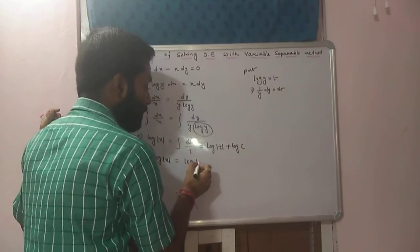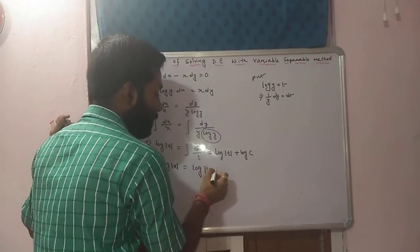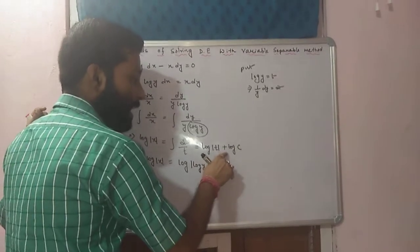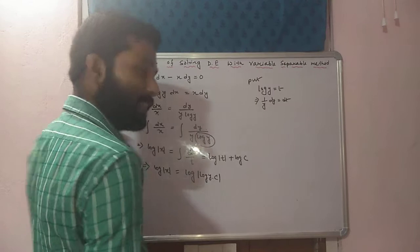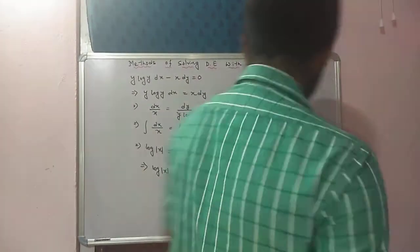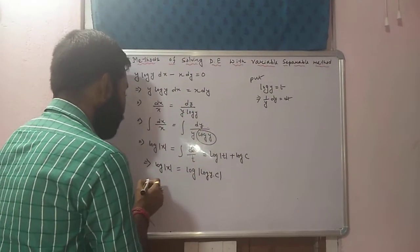Replace this t by log y. Now, log t plus log c. So, log of t into c. Log a plus log b is log of a into b. Now, we can eliminate log from both sides easily.